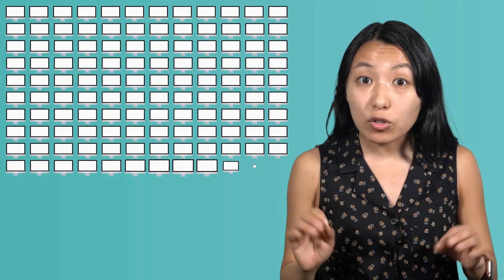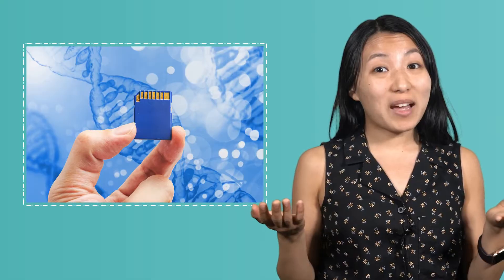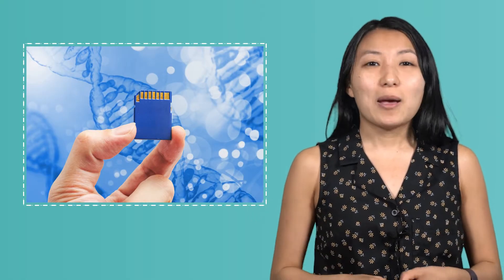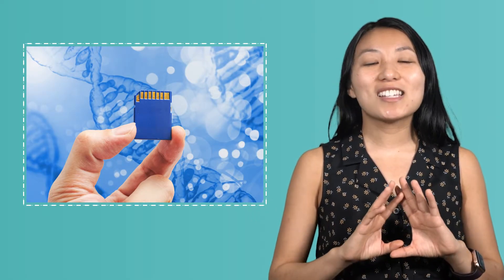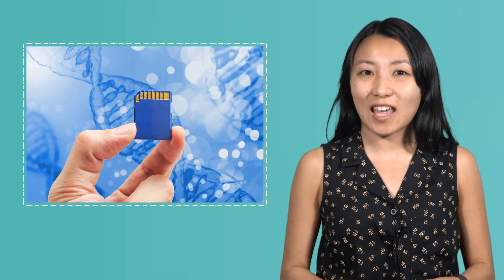Estimates vary, but some scientists believe that the DNA found in just one gram of cells can store up to 455 exabytes of data. To put this into perspective, based on an average computer storing 500 gigs, you would need nearly one billion computers to store that same amount of information digitally. Pound for pound, when it comes to storage capacity, man-made technology simply does not come remotely close to what DNA is capable of.